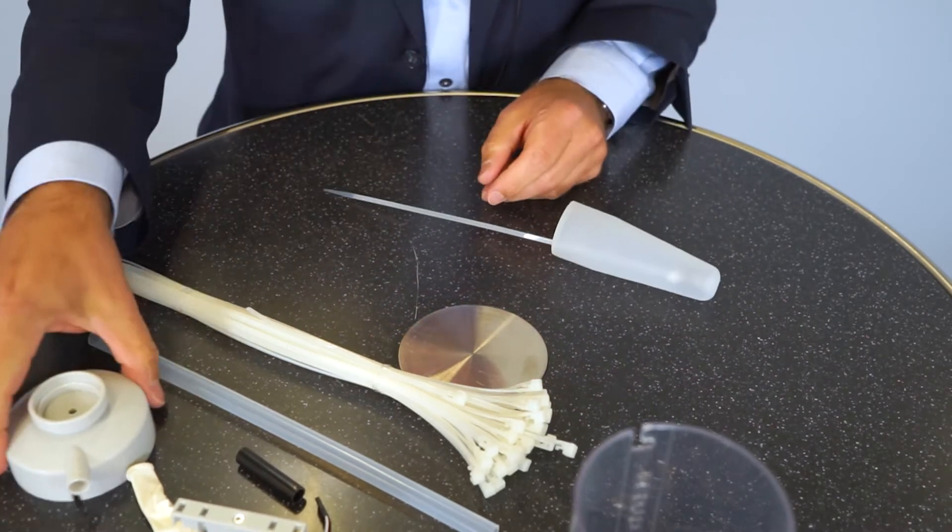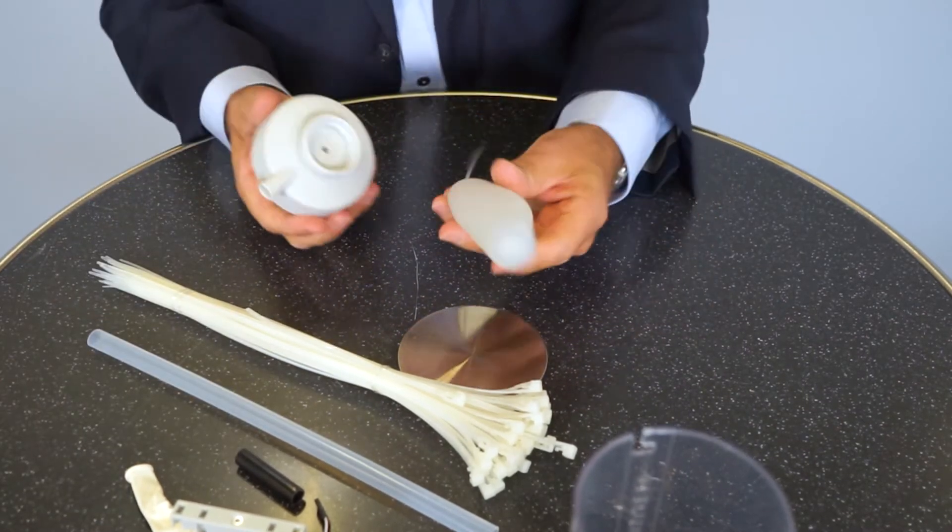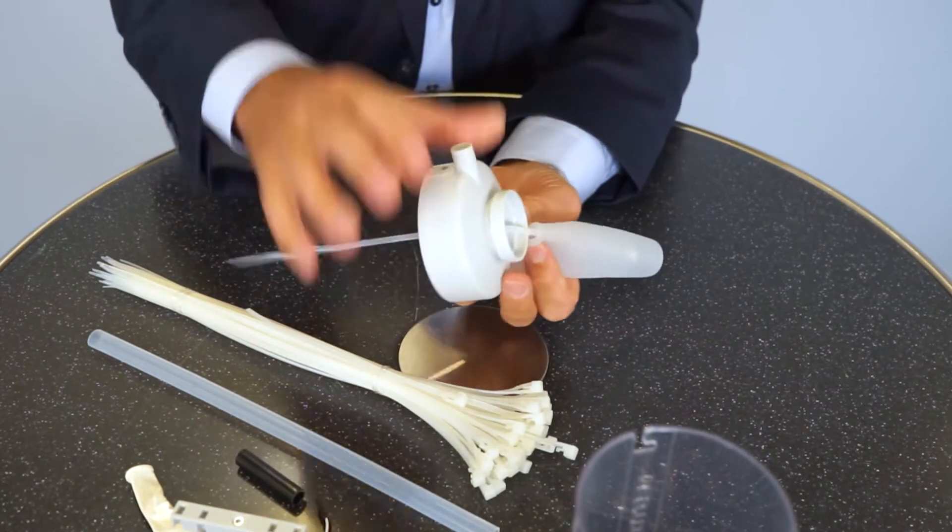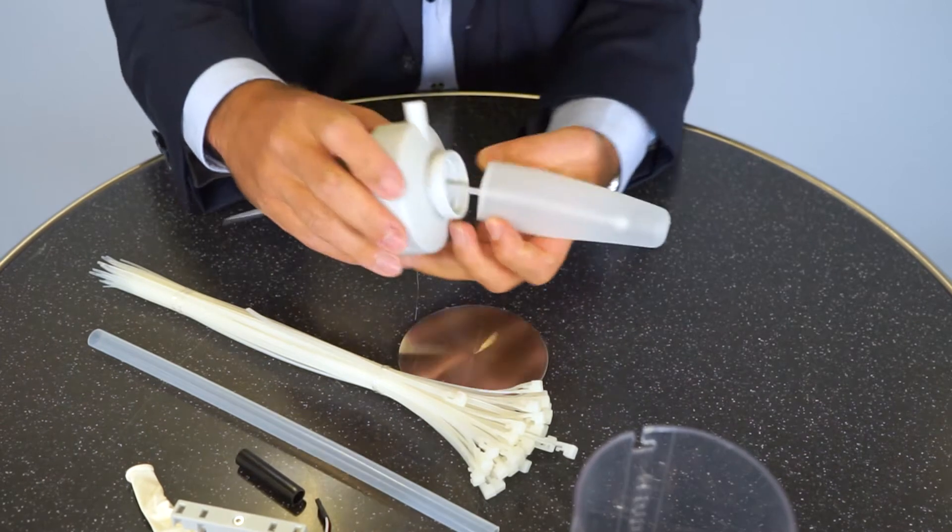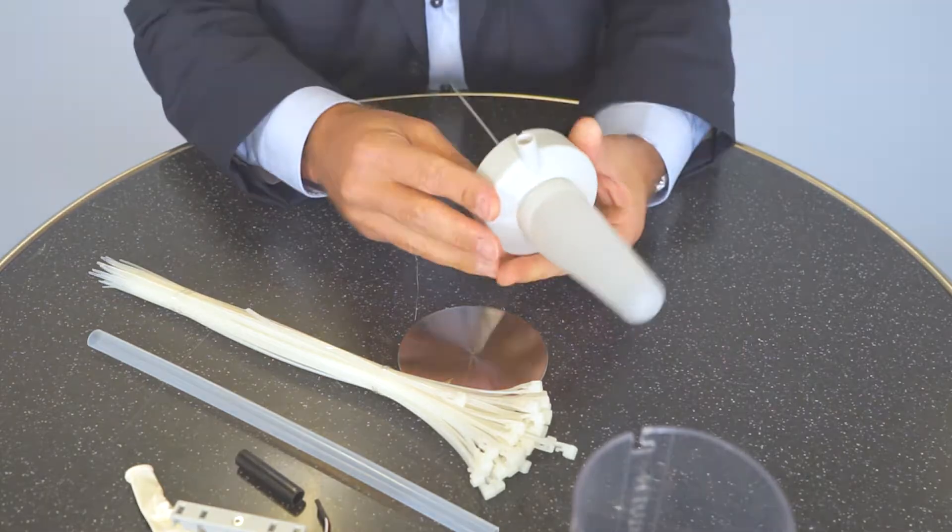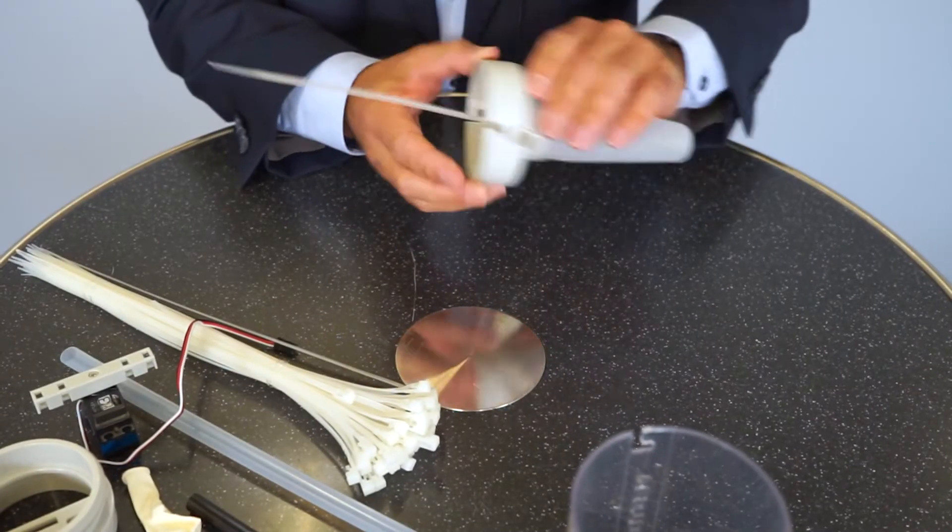Now I connect the soft tip with the top part of the chameleon body. And you see here is a little groove which fixes the soft tip. So very simple. So I put this aside for a moment.